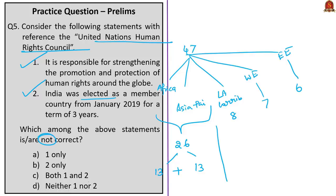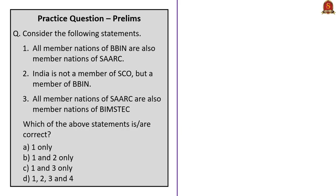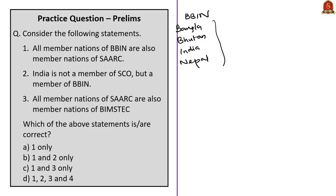This question gives three statements asking which are correct. The first statement: all member nations of BBIN are also member nations of SAARC. BBIN stands for Bangladesh, Bhutan, India, and Nepal. We know these four countries are also member nations of SAARC — South Asian Association for Regional Cooperation — so the first statement is correct.